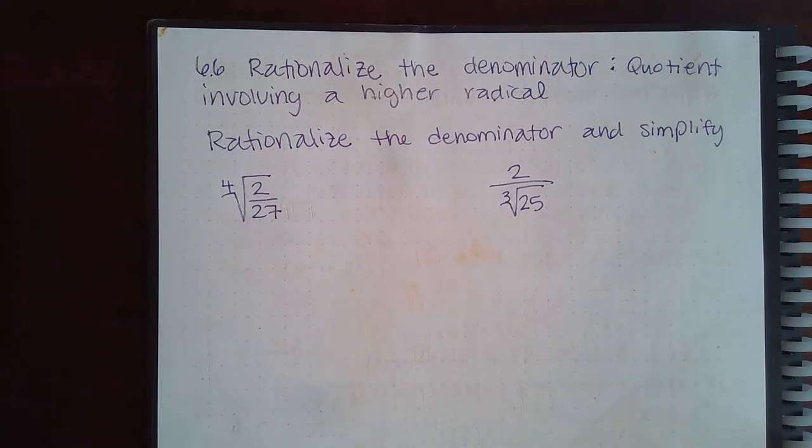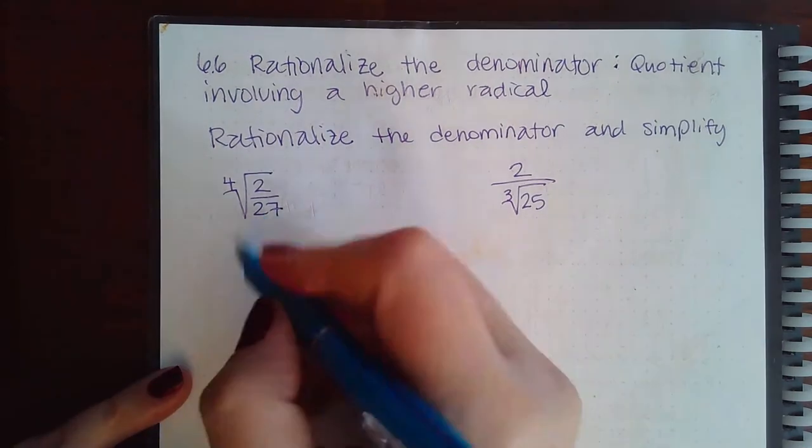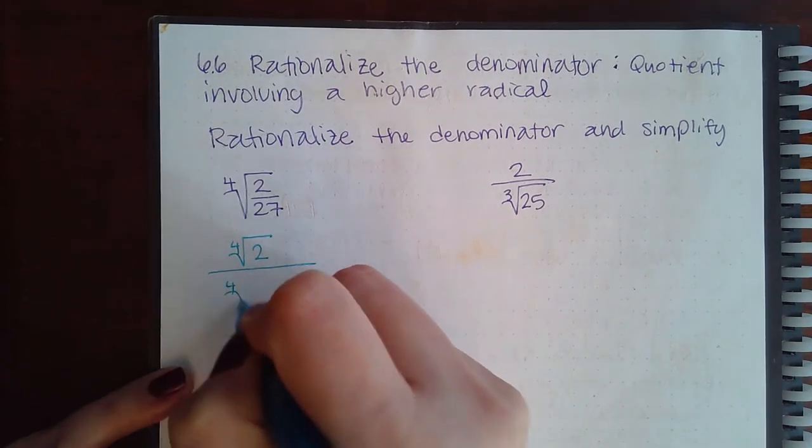Here we have 6.6 rationalize the denominator quotient involving a higher radical. So these you really want to put them in their prime factorization form. I'm going to have the fourth root of 2 over the fourth root of 27.